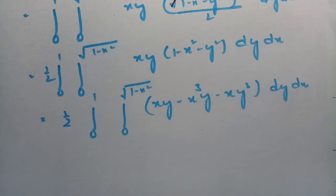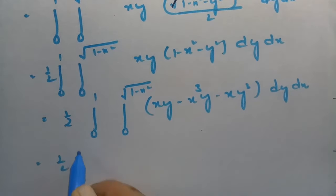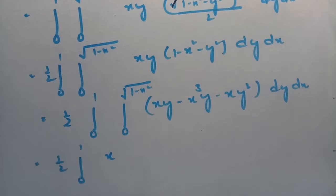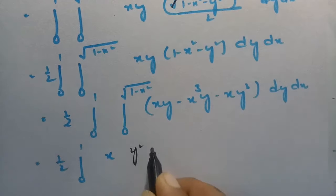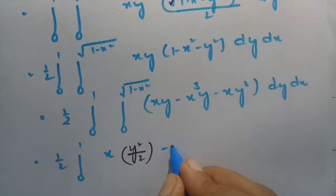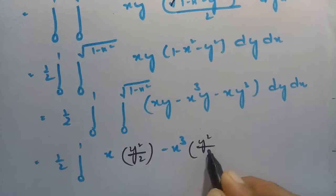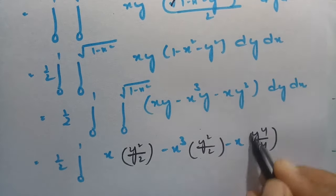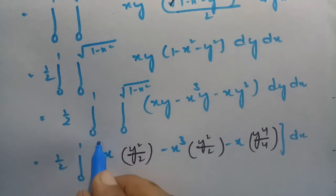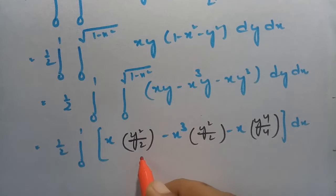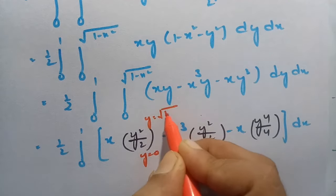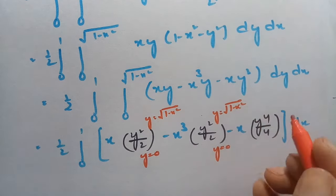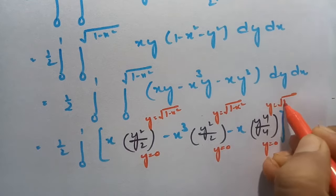Now integrating with respect to y: the terms give xy²/2 − x³·y²/2 − x·y⁴/4, evaluated between y=0 and y=√(1−x²).